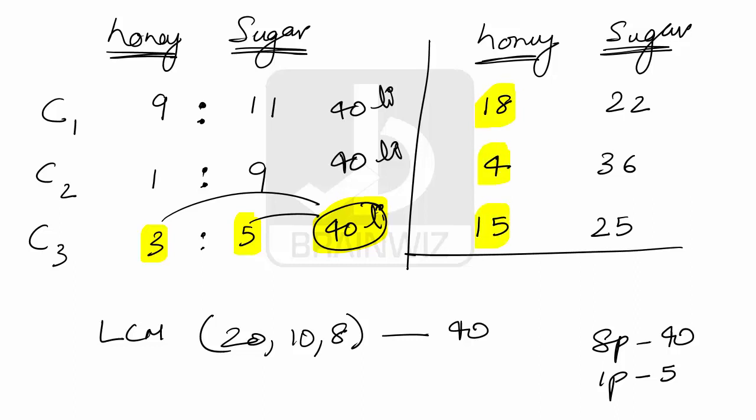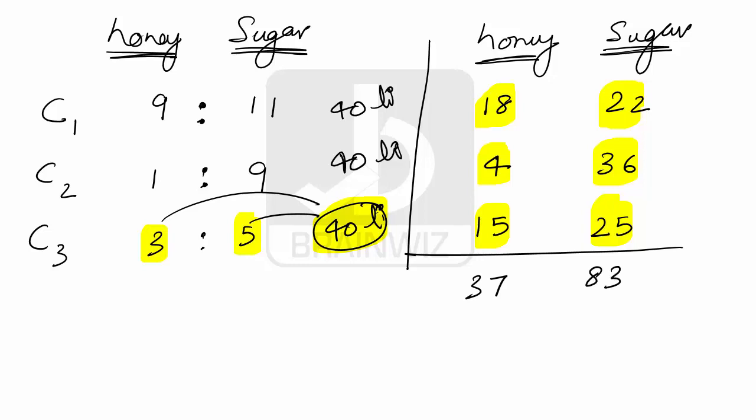Quantities we have to mix and we have to add up. Now this is 37, as well when we add up the quantity of sugar it is 83.